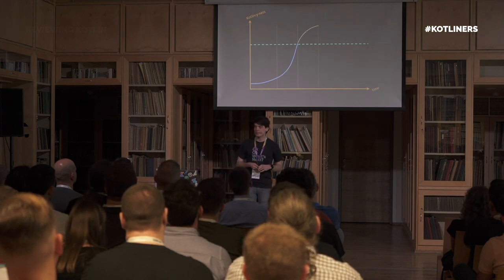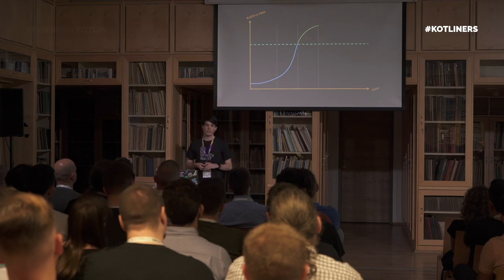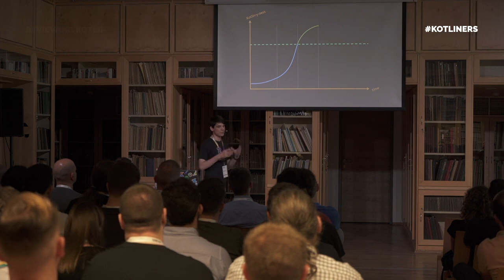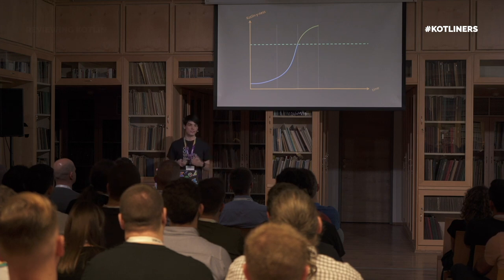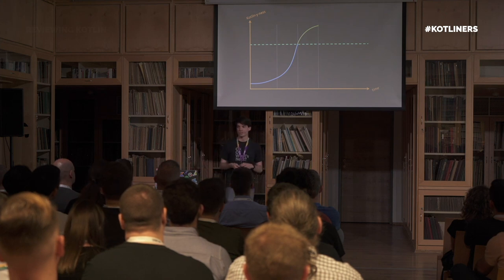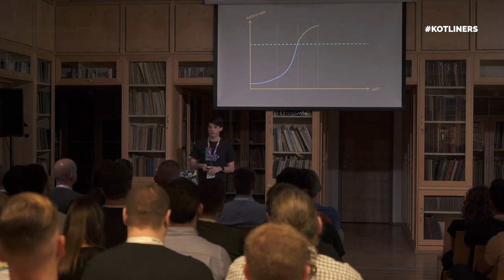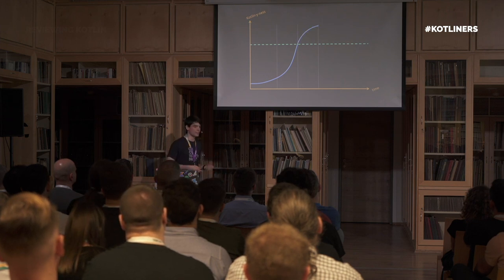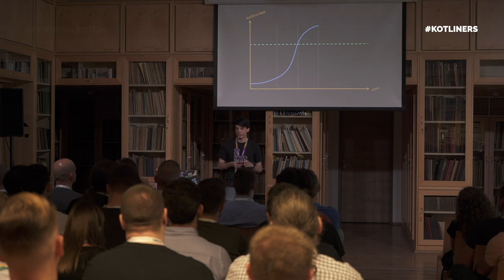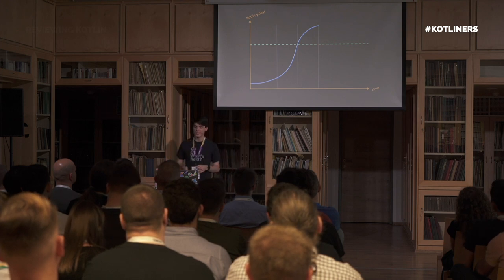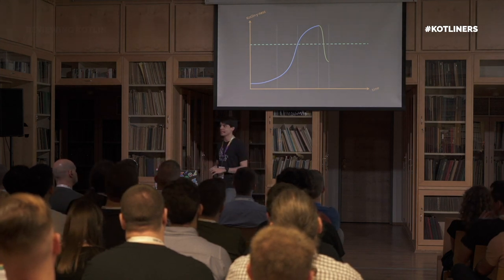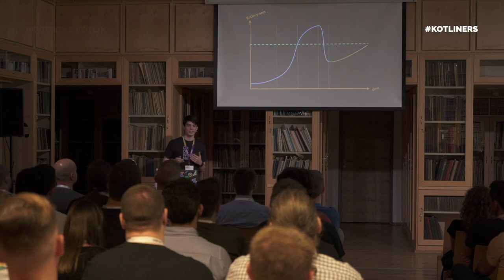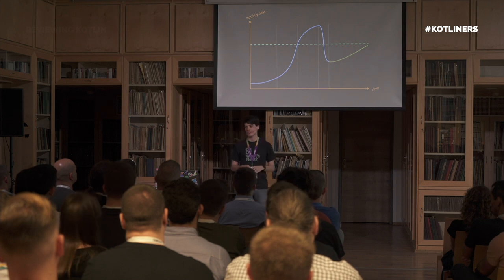Then, at least in my experience, there tends to be a phase where people overshoot this optimal amount and start writing truly magical and clever Kotlin code. It's very easy to misuse all the features the language gives you — putting everything in a single expression, nesting all these scope functions from the standard library. After significant pushback during code reviews, people tend to just abandon features for a while to play it safe, then slowly find their way back to the optimal level on their own.